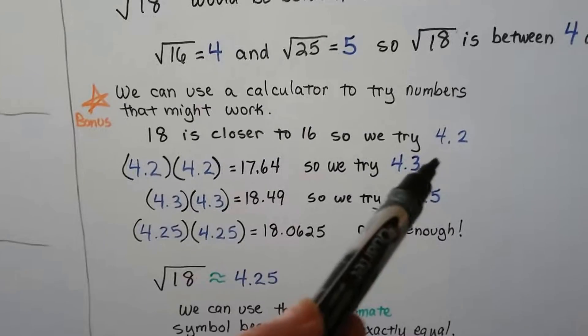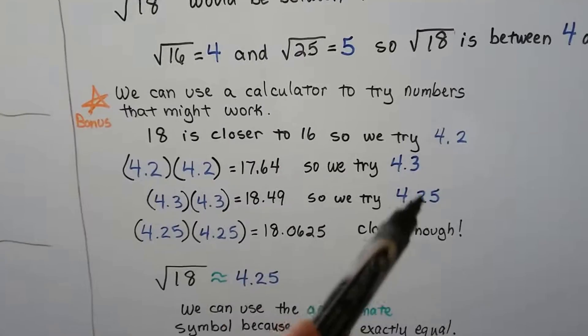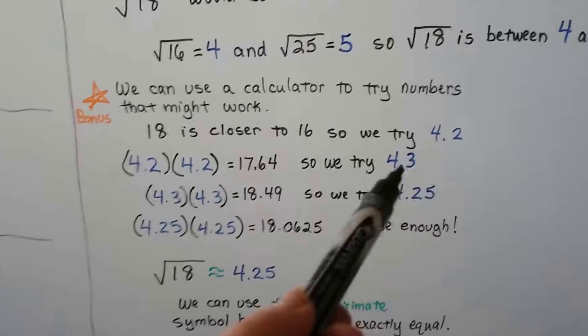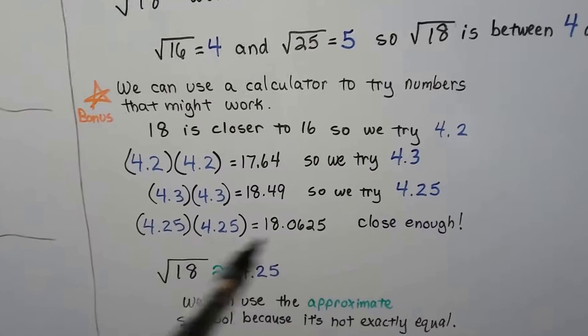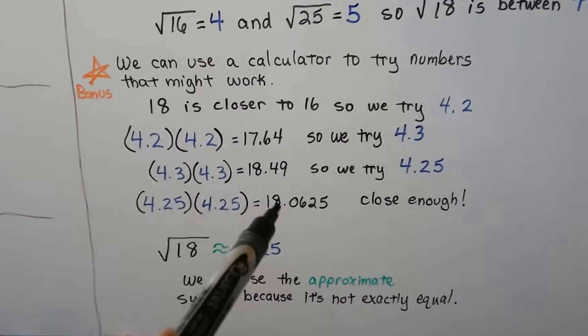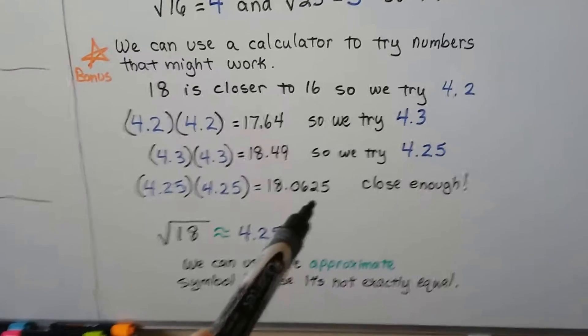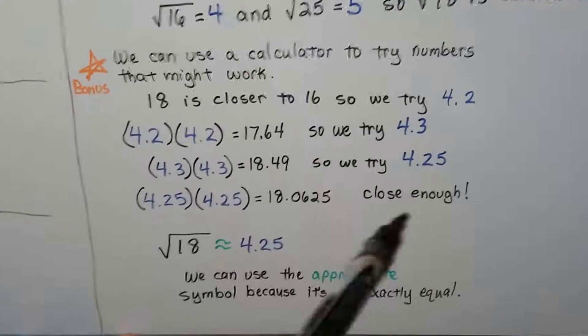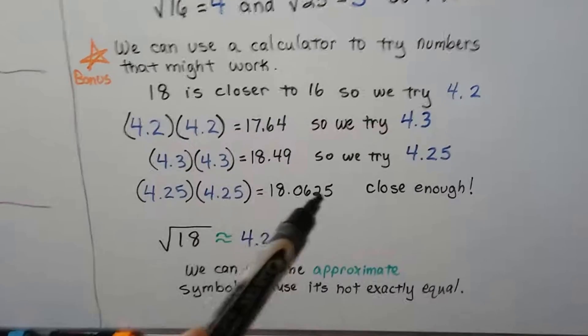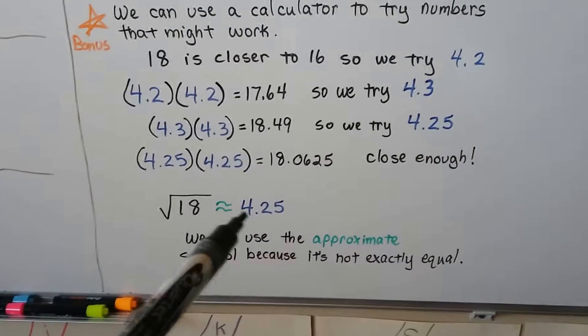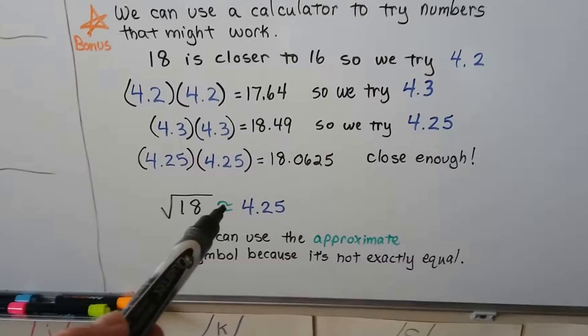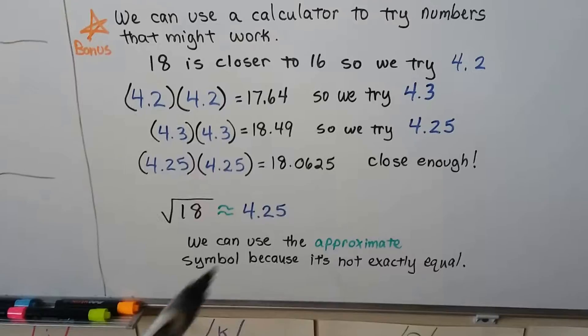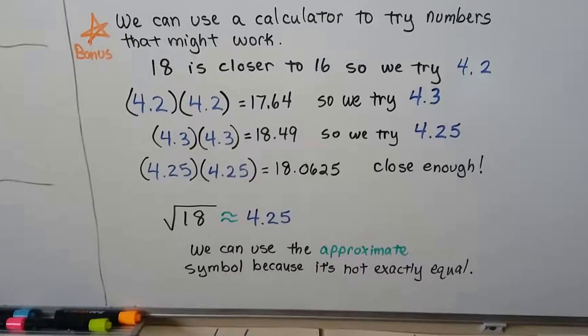So, we have to go back. So, instead of doing 4.2 or 4.3, we'll go in the middle and do 4.25. That's in between these two. We do 4.25 times 4.25 and get 18.0625. Now, we could keep going on and try 4.245 and go farther and farther into decimals. But, this is close enough. So, we could say the square root of 18 is approximately 4.25. We use that approximate symbol because it's not an exact answer.